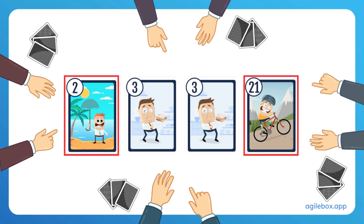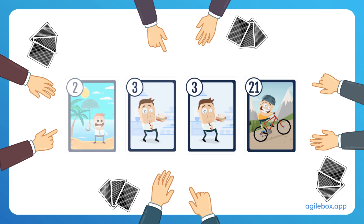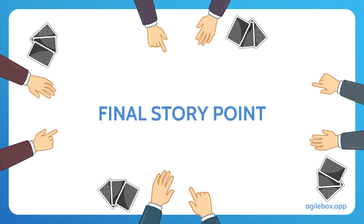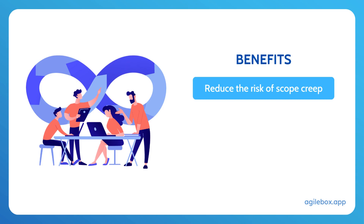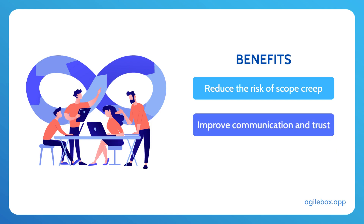If there is a wide range of estimates, the team members with the highest and lowest estimates explain their reasoning. The team then has a brief discussion to reach a consensus. The estimate is then used to plan the work and allocate resources accordingly. Planning Poker is a simple and effective technique that can help reduce the risk of scope creep and improve communication and trust within the team.